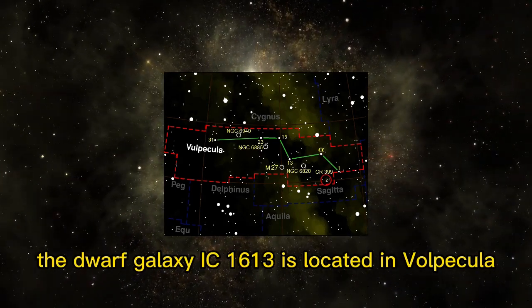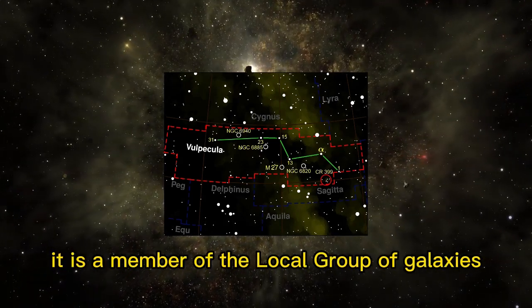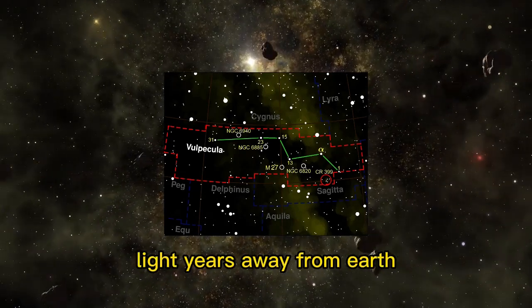The dwarf galaxy IC 1613 is located in Vulpecula. It is a member of the Local Group of galaxies and is located about 2.3 million light-years away from Earth.